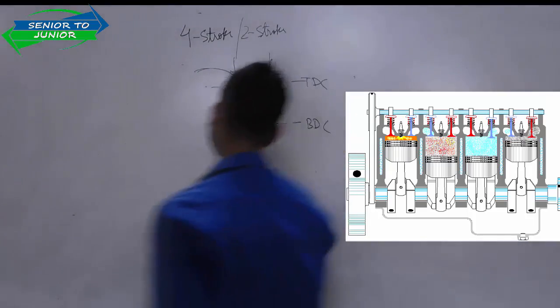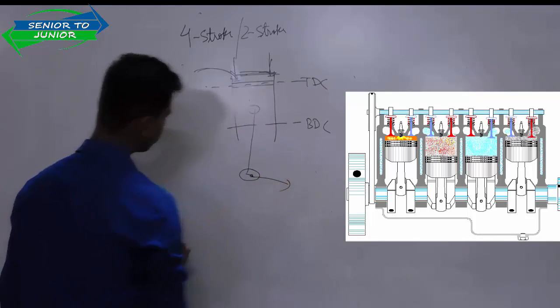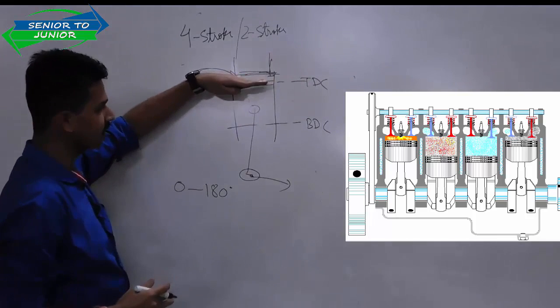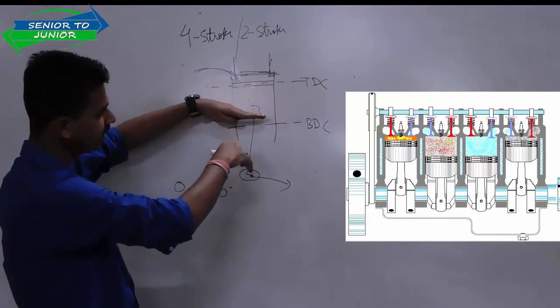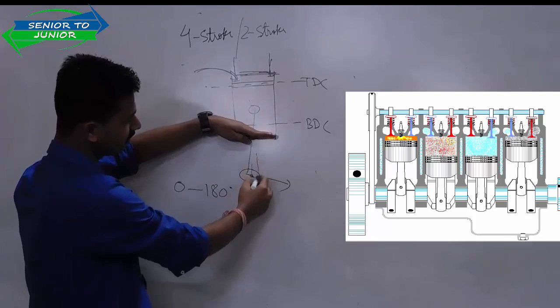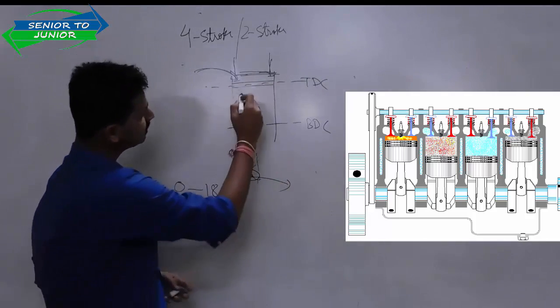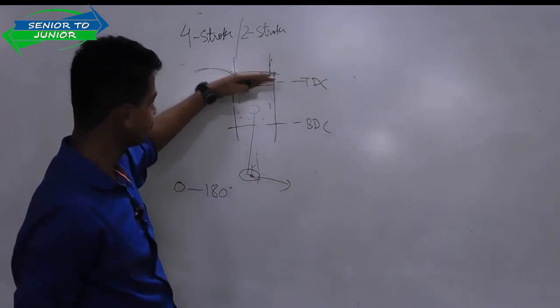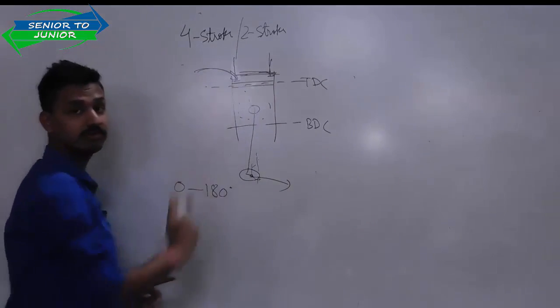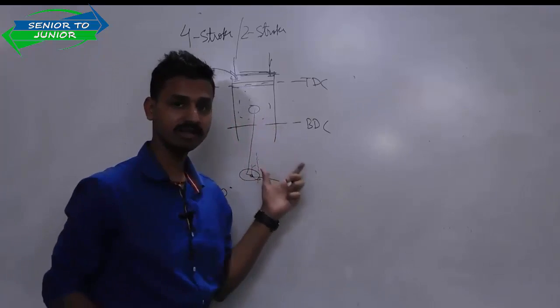In this, the crankshaft rotates from 0 to 180 degrees of crank rotation. The piston starts to take air inside and this angle converts to 180 degrees. This is called your suction stroke, and this is the only stroke in which the pressure inside the cylinder is less than the atmosphere because you are creating a vacuum through which the air goes inside your cylinder. If it is a petrol engine, air and fuel mixture. If it is a diesel engine, only air.